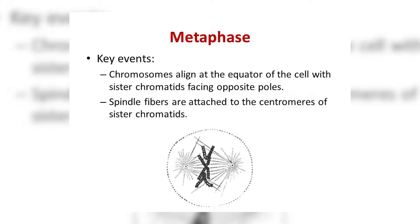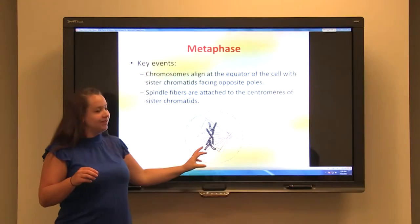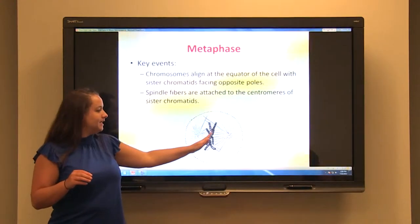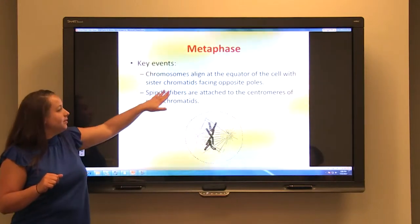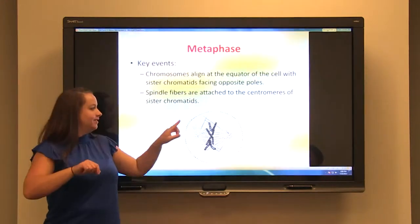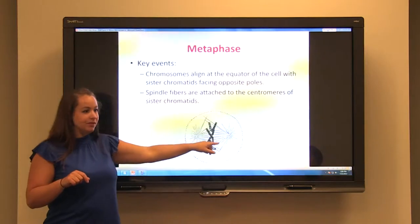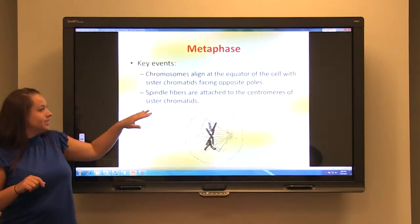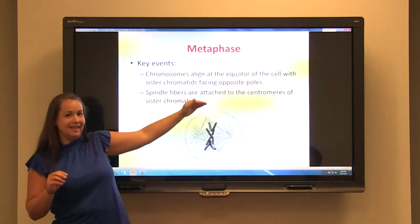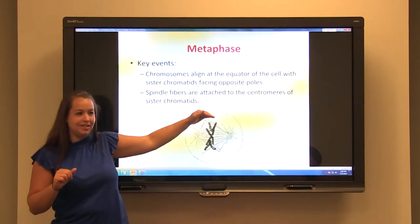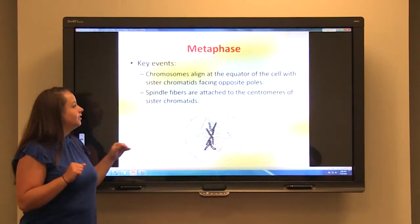The second phase of mitosis is metaphase. During metaphase, the chromosomes — which condensed down in prophase — align at the equator of the cell, equidistant between both poles. You have sister chromatids on either side of the X facing opposite poles. The spindle fibers, originally attached to your centrioles, extend out and attach to the central area of your sister chromatids.